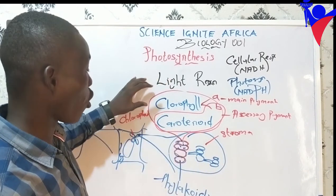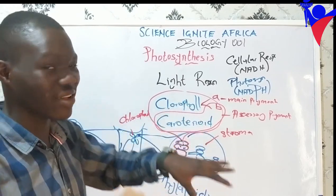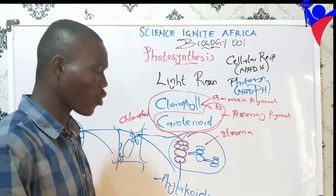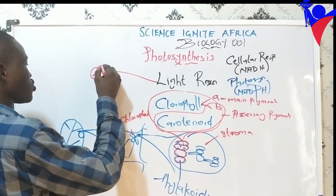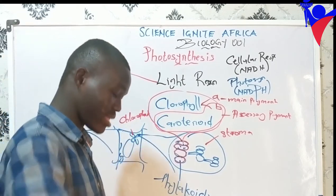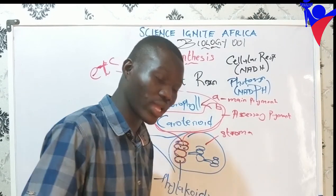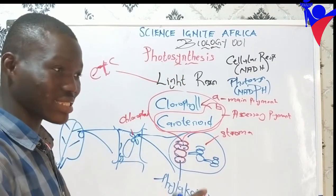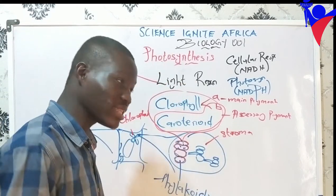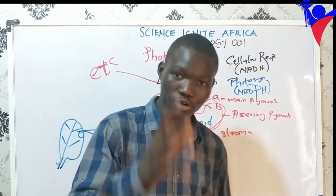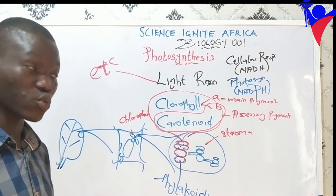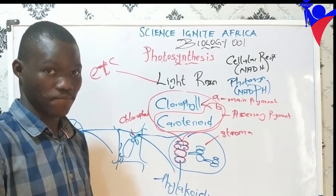The light reaction — we can actually call it an electron transport chain, because we'll be passing electrons from one electron carrier to another electron carrier. The light reaction occurs in the chloroplast, and the pigment that actually does this work is chlorophyll, with carotenoids as accessory pigments. The major chlorophyll that does this work is chlorophyll A.